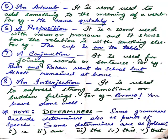Number 8 is interjection. It is used to express strong emotions or sudden feelings. For example, 'Bravo, you have done well.' Interjection is a very strong feeling which suddenly comes out when you are excited or very sad — like 'Oh no,' 'Alas,' 'Bravo,' or 'Hooray, we won the match.' It also ends with an exclamation mark. So an interjection is used to express strong, sudden feelings.